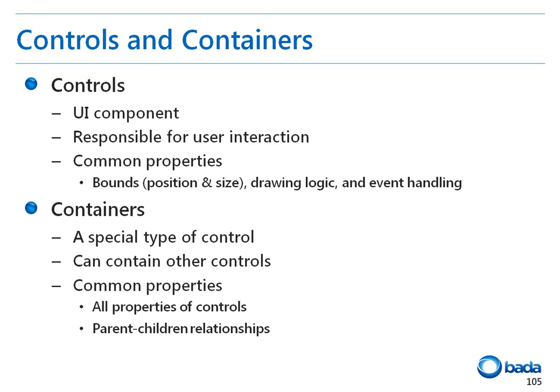Let's have a look at the UI control hierarchy in more detail. First, the item at the bottom is the control class. This control class is the base class for all UI classes. This class provides functions to receive user interactions and properties such as the bounds, which are common to all controls, to perform custom drawing, and also to handle events. Controls that contain other controls are called containers. Container classes provide functions to manage the parent-child relationship as well as all the functions of the control.